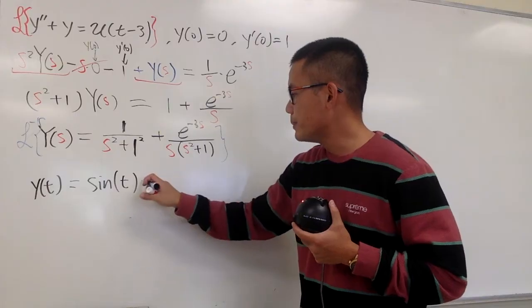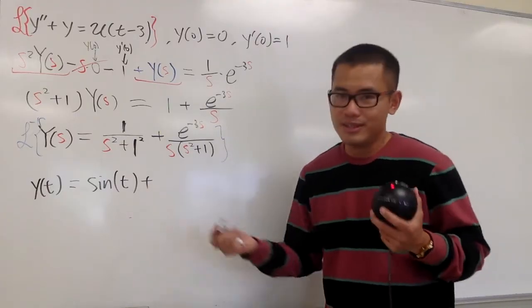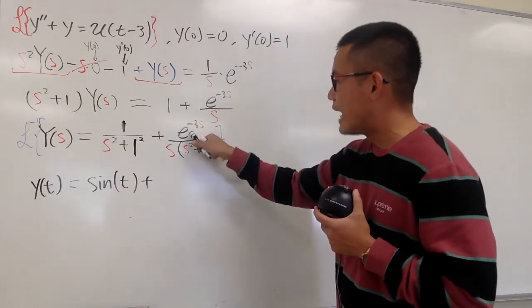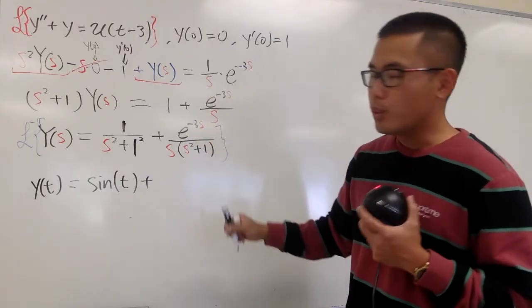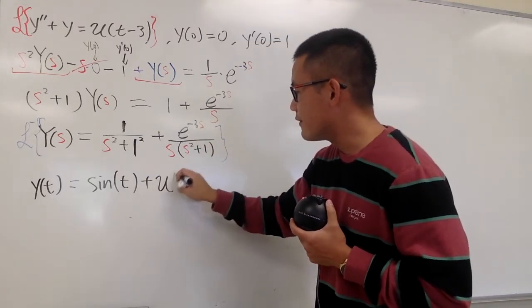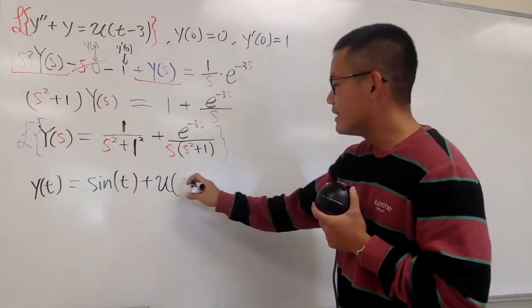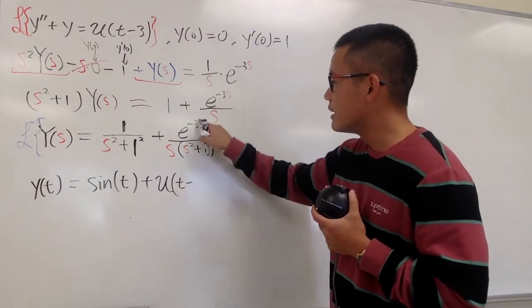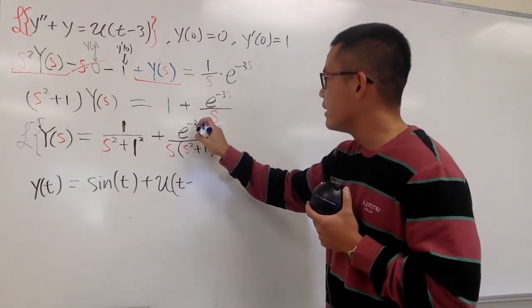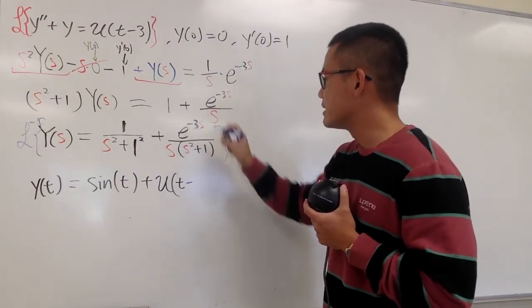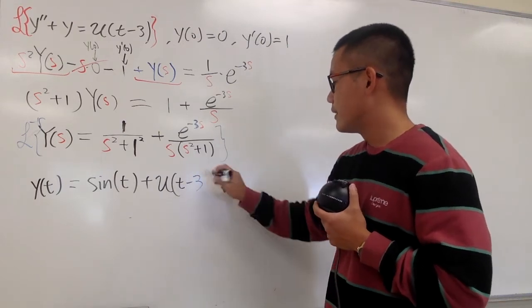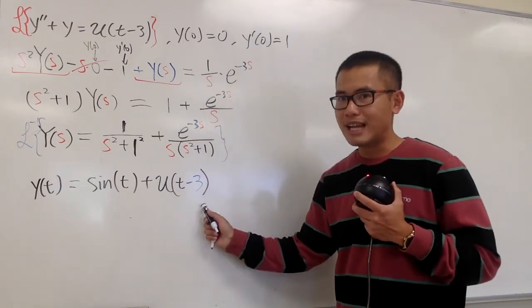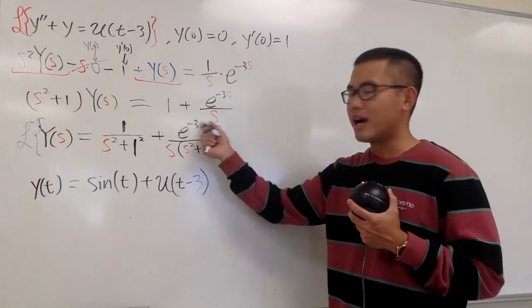Next, we are going to be adding, and this is how you're going to do this. Here we have E to the negative 3S. You know when you go back to the T world, you are going to end up with the unit step function, and the input is going to be T minus this 3. Once again, it's because of negative 3S, so the input is T minus 3. So always put that down first, whenever you see E to the negative 3S.